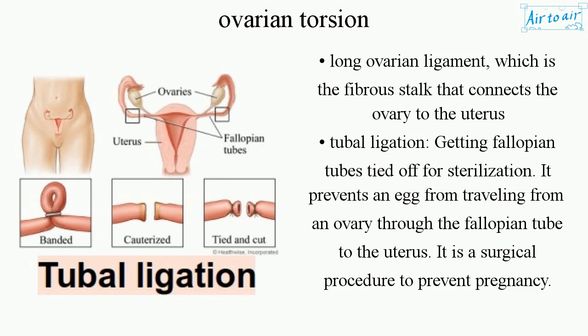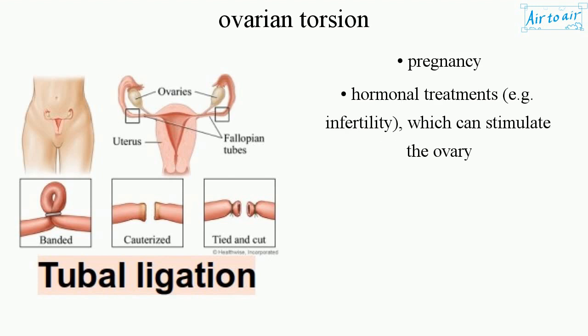Tubal ligation — getting fallopian tubes tied off for sterilization — prevents an egg from traveling from an ovary through the fallopian tube to the uterus; it is a surgical procedure to prevent pregnancy. Additional risk factors include pregnancy and hormonal treatments, such as infertility treatments, which can stimulate the ovary.